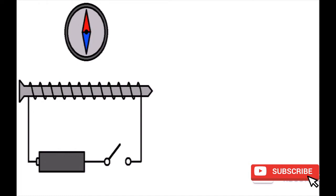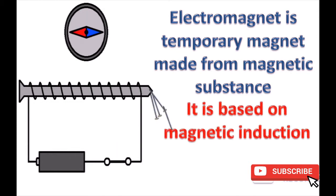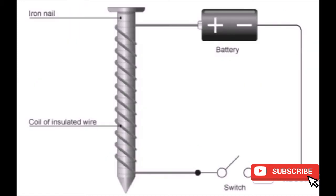An electromagnet is a temporary magnet made from magnetic substance, which is formed from iron nail-like substance based on magnetic induction. It can be made from iron nail coiled by copper insulating wire.